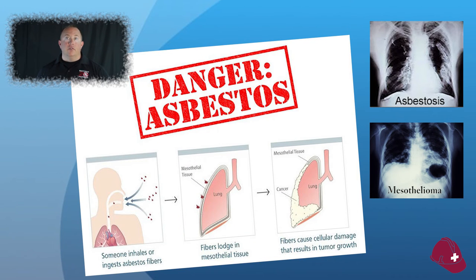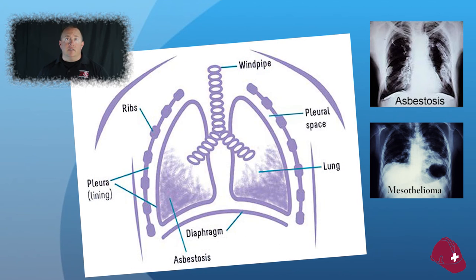Mesothelioma is a cancerous tumor that forms in the tissue outside of the lung and on the inside of the chest wall. Once symptoms appear, the survival rate is between 14 to 16 months. Symptoms include shortness of breath, chest pain, and weight loss. Asbestosis is abnormal scarring of lung tissue. Symptoms can occur as early as 10 years after exposure and it is the main type of lung cancer involving asbestos.